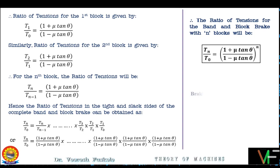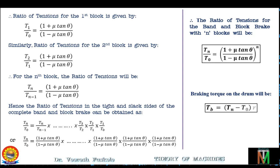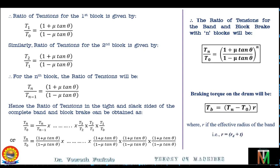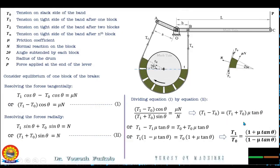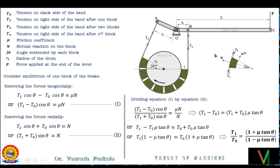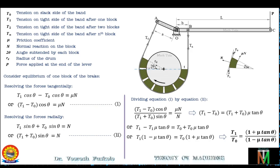The breaking torque on the drum is Tb = (Tn − T0) × R, where R is the effective radius of the band, equal to Rd + t, with Rd being the drum radius and t the thickness of the block. From these equations you can calculate either the coefficient of friction or the angle of contact as desired. The force P can be calculated by considering the free body diagram of the lever and taking moments of forces about the fulcrum, using the same method discussed in the previous band brake lectures.